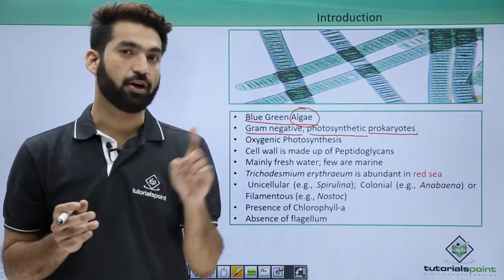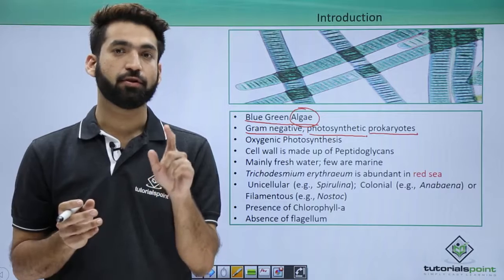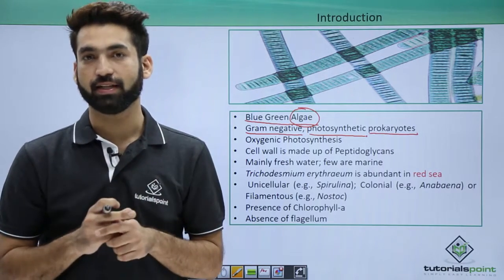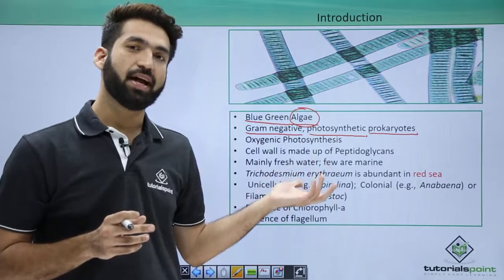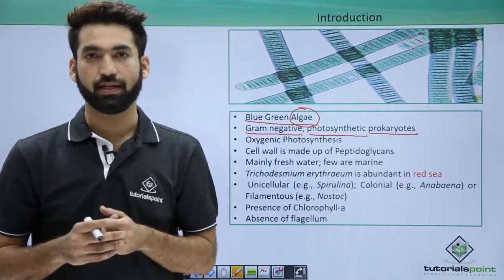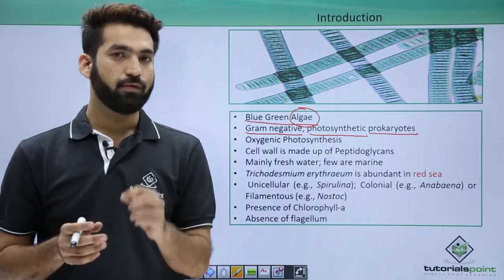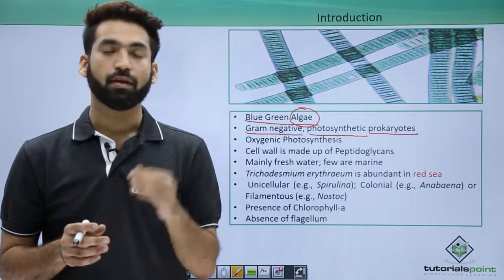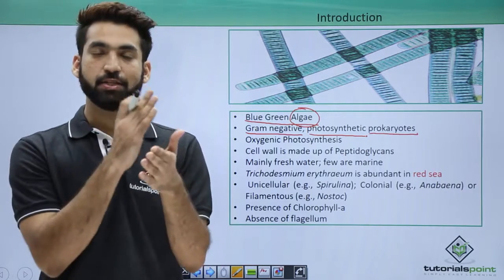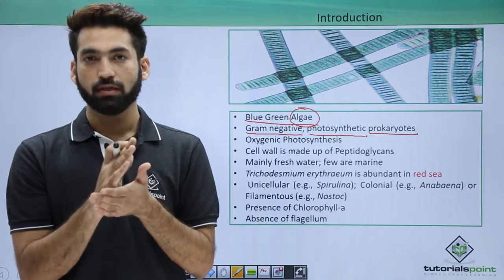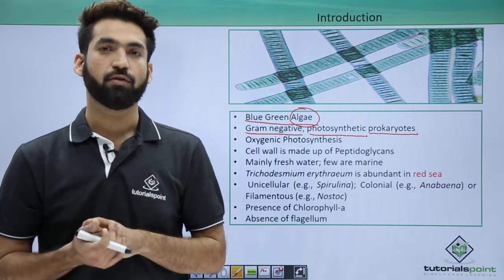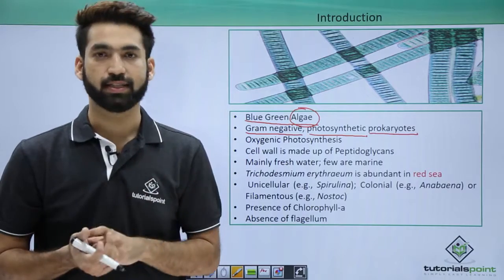Chlorophyll was not present in photosynthetic bacteria — they had bacterial chlorophyll instead. But here, cyanobacteria share a similarity with higher plants in having the chlorophyll A molecule to trap light. Also, remember that in photosynthetic bacteria, water was never used as a source of electrons.